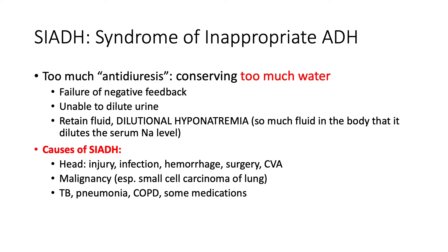SIADH happens because of the failure of a negative feedback loop. Typically, when our body secretes ADH due to signs of low blood volume, it tries to maintain balance — secreting ADH and then slowing down or stopping secretion shortly after, so things don't get out of hand. That's a negative feedback loop. However, in SIADH, we're not slowing down. We have lots of unopposed ADH secretion. In diabetes insipidus, we were dehydrated and lab values were high because they were concentrated — serum osmolality, serum sodium, etc. The opposite is true for SIADH.